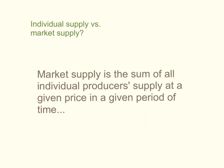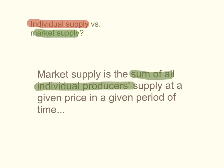So what is the difference between an individual producer's supply and the market supply? Basically, it's just a matter of adding it all up together. Market supply is the sum of all individual producers' supply at a given price in a given period of time. If you add up all the supply by individual producers, this gives you the market supply.